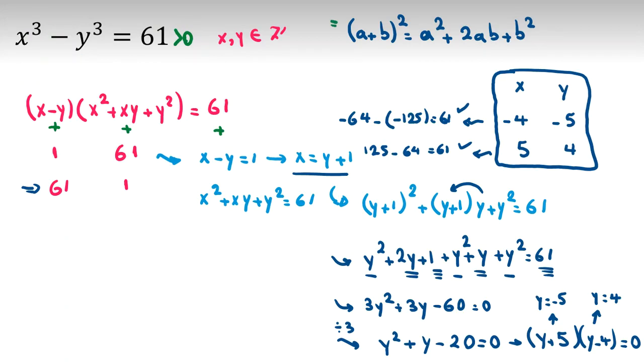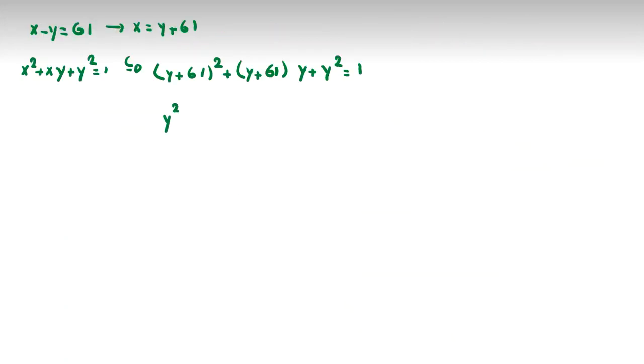Now again, we use this identity. y squared, 2 times 61y, plus 61 squared. y squared plus y squared plus 61y plus y squared equals 1. y squared, y squared, y squared: 3y squared. 2y, 61y will be plus 183y. Plus 61 squared minus 1.